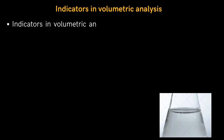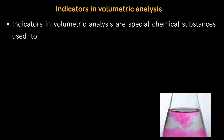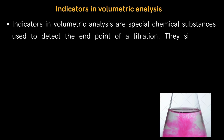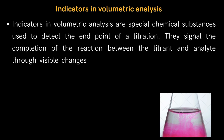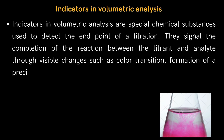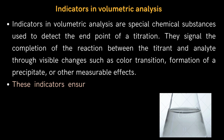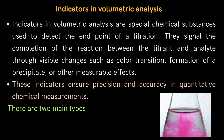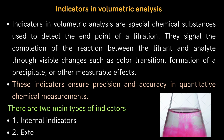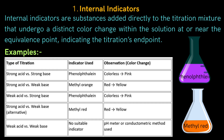Now let's discuss indicators used in volumetric analysis. Indicators are special chemical substances used to detect the endpoint of a titration. They signal the completion of the reaction between the titrant and analyte through visible changes such as color transition, formation of a precipitate, or other measurable effects. These indicators ensure precision and accuracy in quantitative chemical measurements. There are two main types: internal indicators and external indicators. Internal indicators are substances added directly to the titration mixture that undergo a distinct color change within the solution at or near the equivalence point, indicating the titration's endpoint.